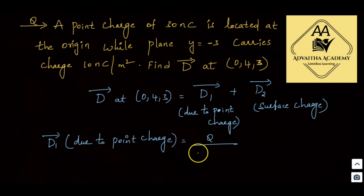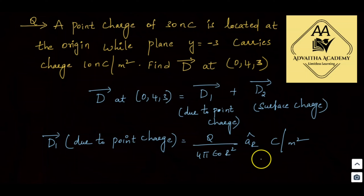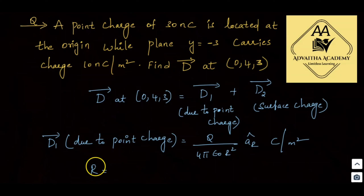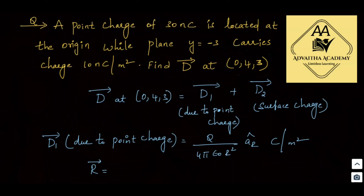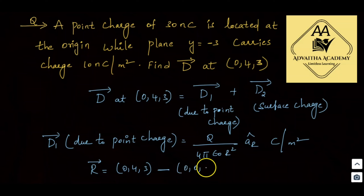The general formula: D̄ due to a point charge is equal to Q divided by 4π r² into âᵣ. The units for D are coulombs per meter square. Here, r̄ is the distance vector — it is the point of interest minus the position of the point charge. The point of interest is (0, 4, 3) and the point charge is at the origin (0, 0, 0).